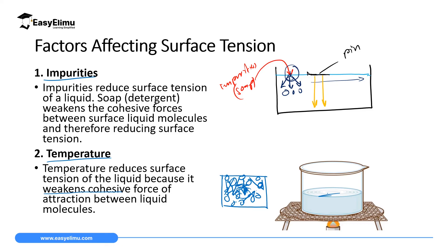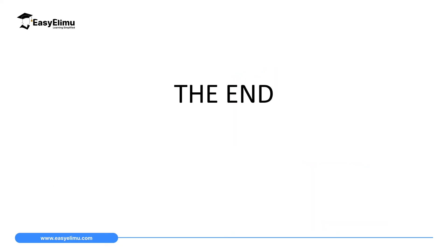You can increase the surface tension of a liquid by reducing the temperature. When you reduce the temperature, the movement between particles decreases, meaning the stretched elastic skin becomes stronger with the decrease in temperature of the liquid surface.